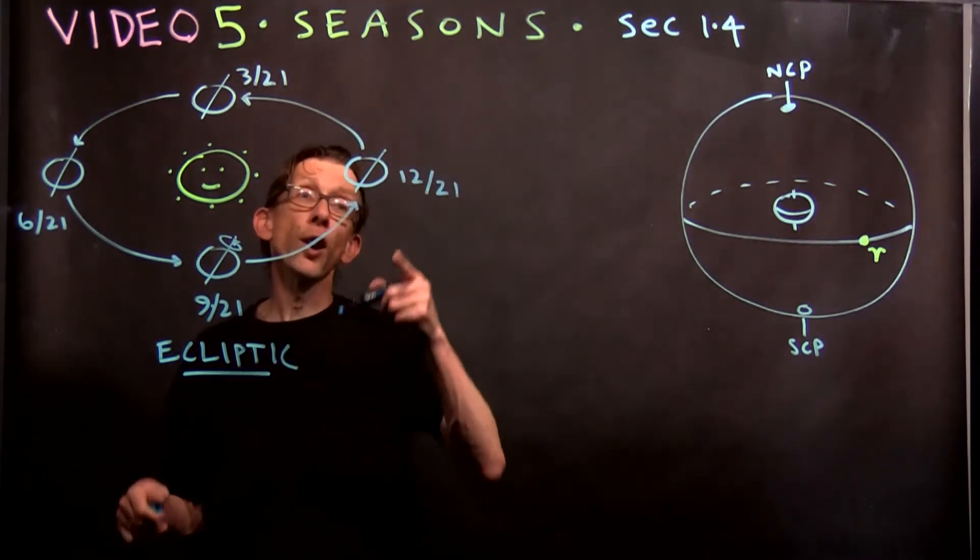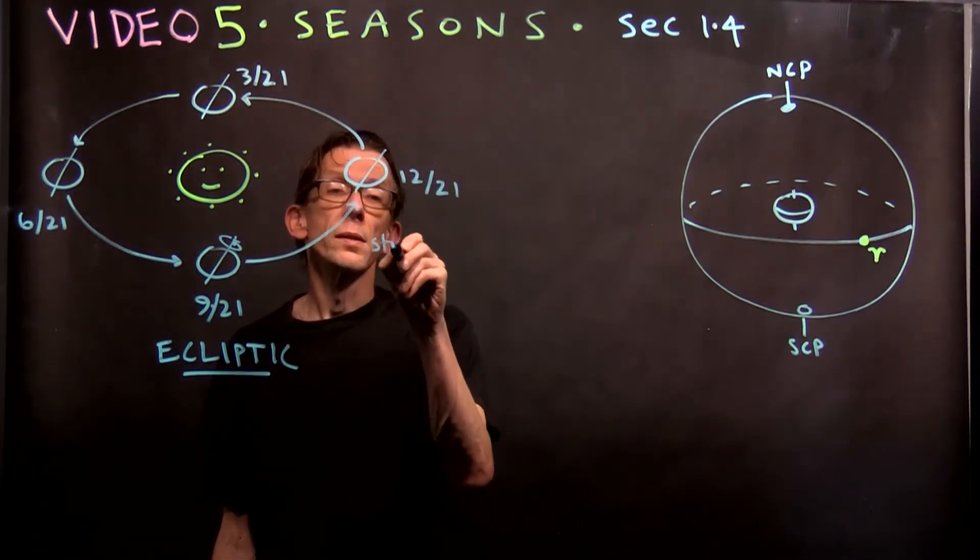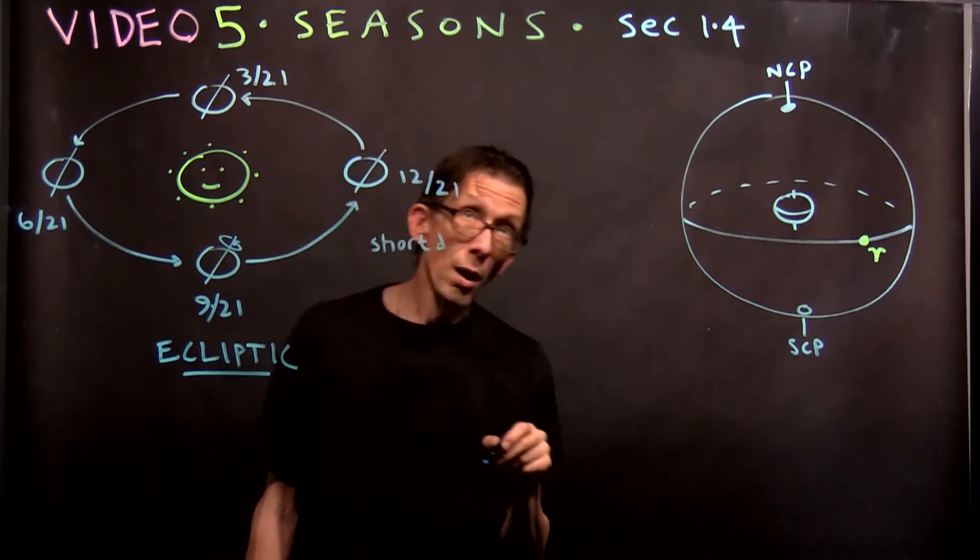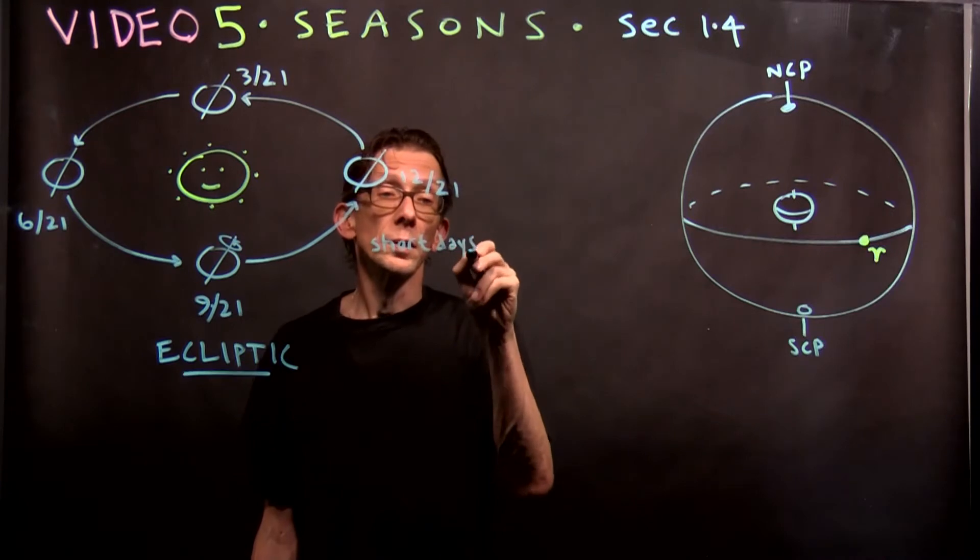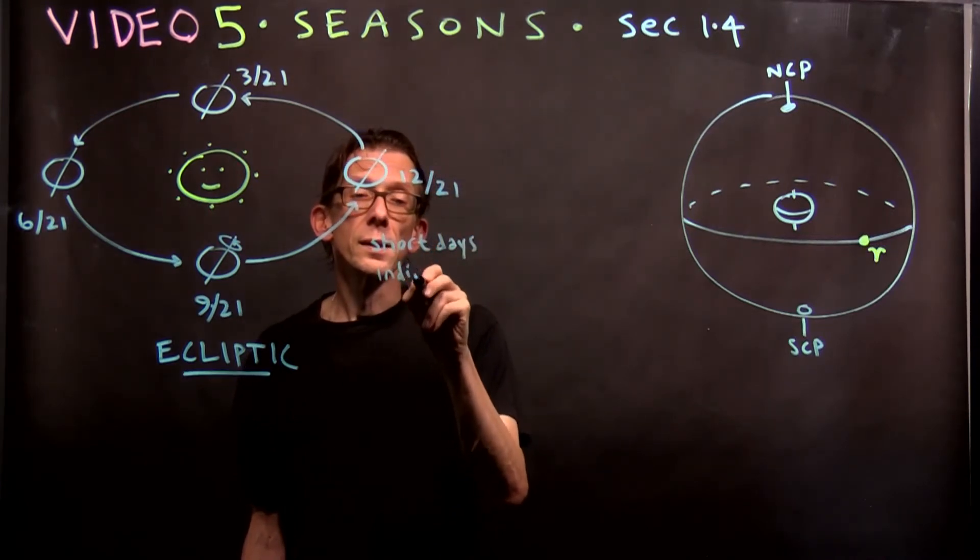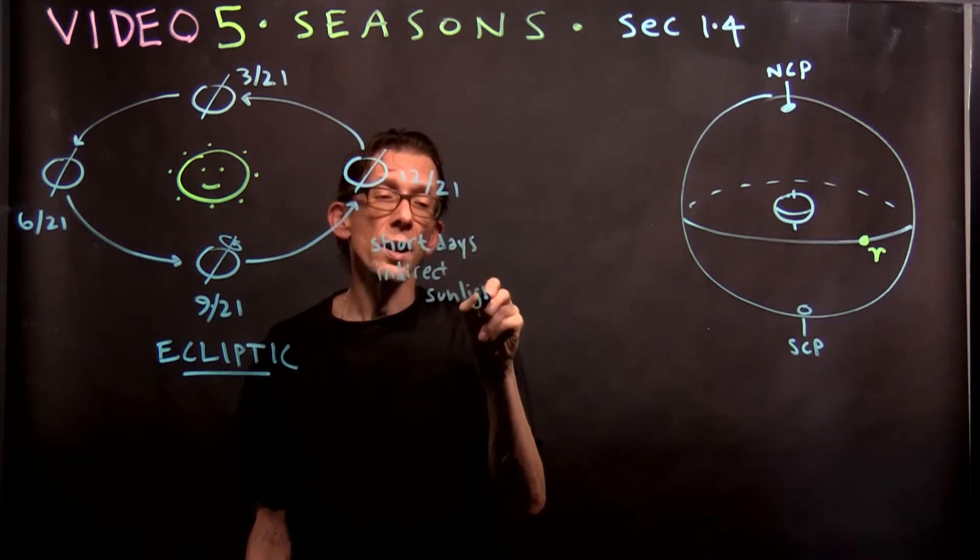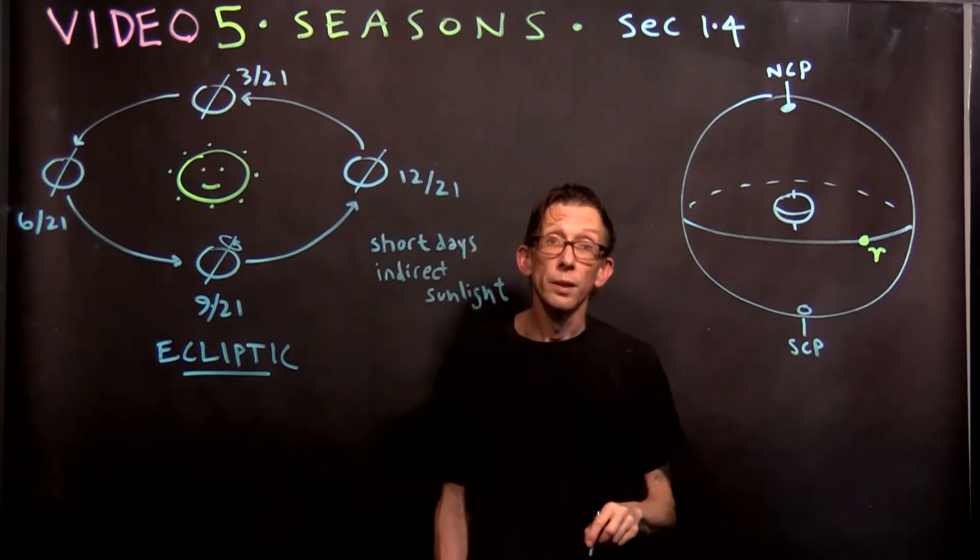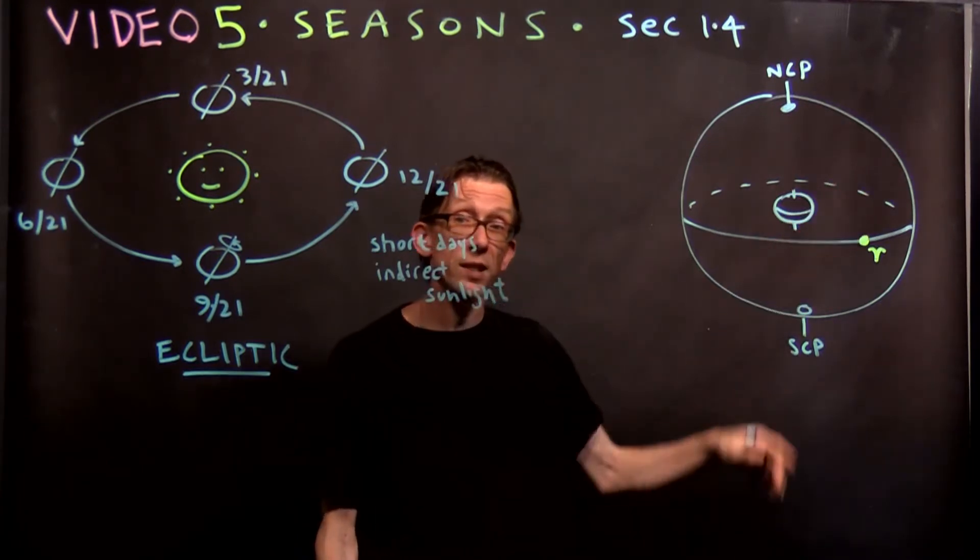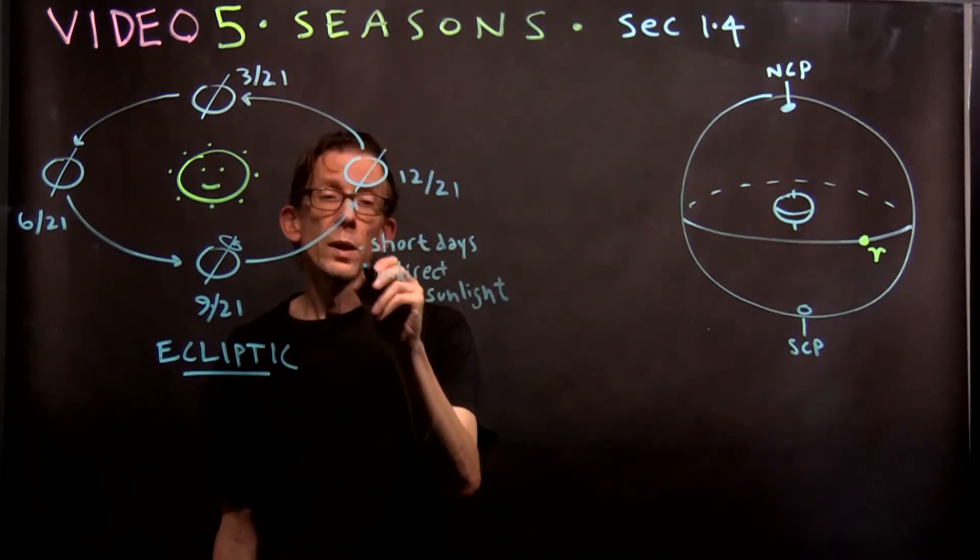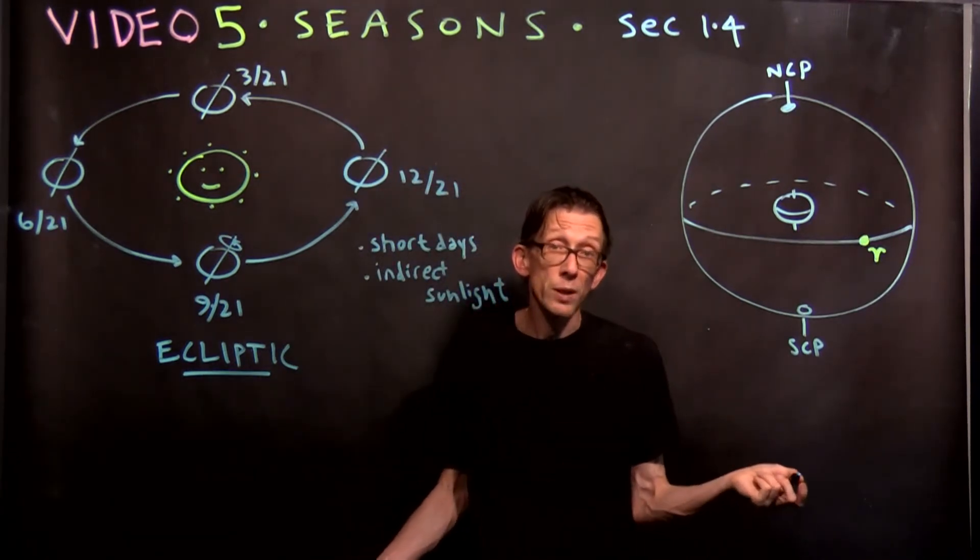That tilt is what's responsible for the seasons. And the seasons come because over here in winter, you have short days. And on our Stellarium labs, we'll see how this works. You have short days and indirect sunlight. That is, the sun is never very high in the sky in the winter.